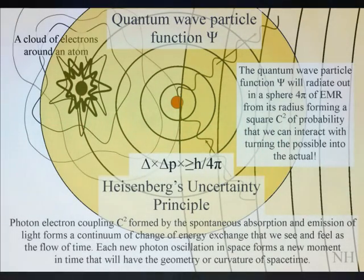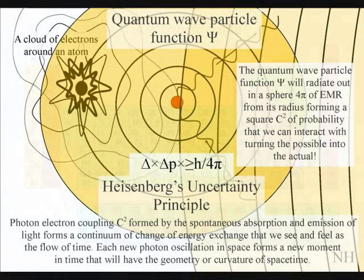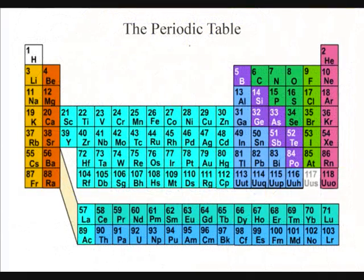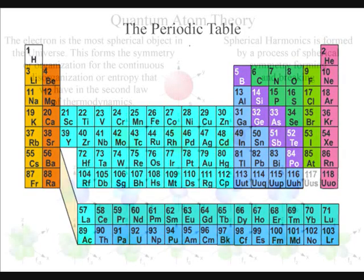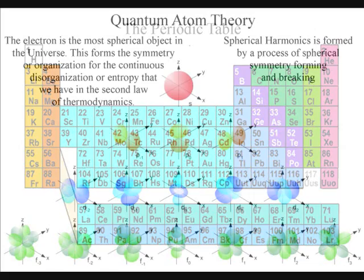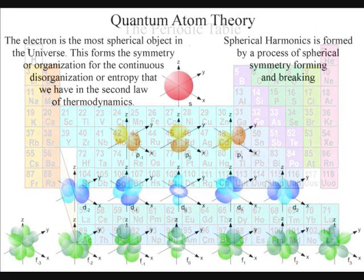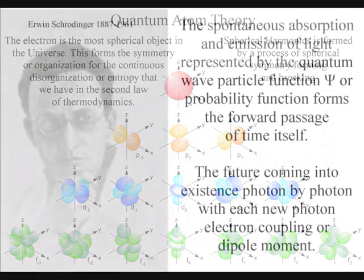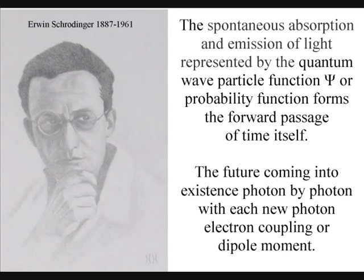To understand this we will start with the periodic table of elements and the main principles of this theory. The periodic table of elements is the cornerstone of modern chemistry, but in many ways it is based on the paradoxes of quantum mechanics. This theory is based on just two simple postulates. The first is that the quantum wave-particle function or probability function represents the forward passage of time itself, photon by photon.